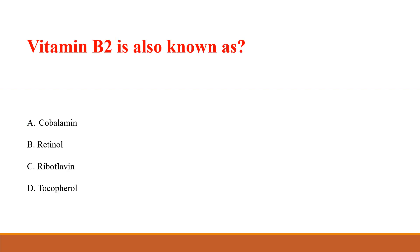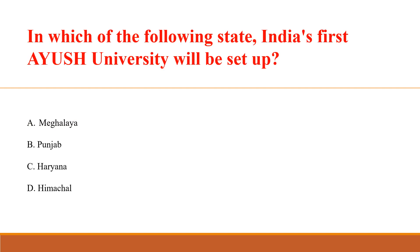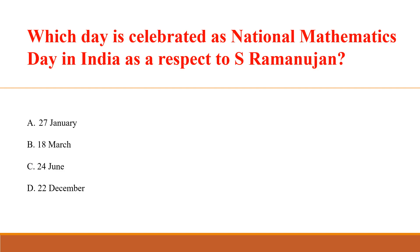Vitamin B2 is also known as: Answer C: Riboflavin. Electron volt is a unit of energy. In which of the following states will India's first AI University be set up? Answer C: Haryana.